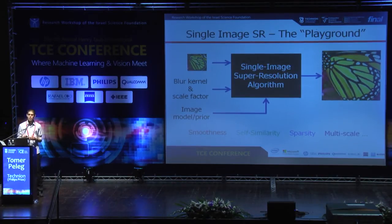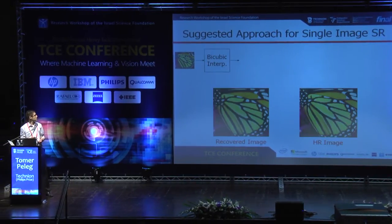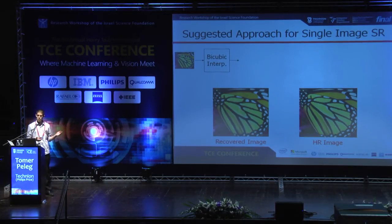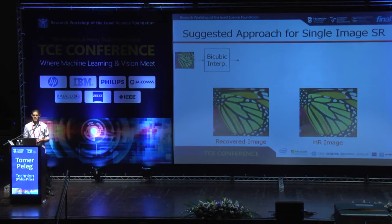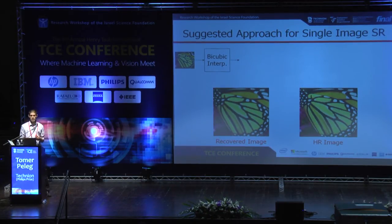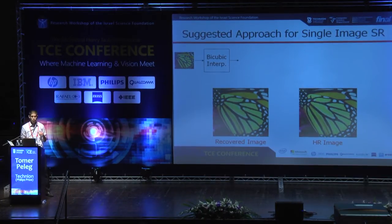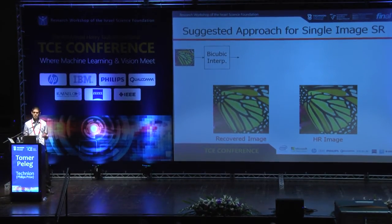Before we do so, I would like to show an overview of our approach. First of all, we perform bicubic interpolation on the low resolution image. On the right you see the ground truth high resolution image, and on the left the recovered image after bicubic interpolation. Both have the same number of pixels, but the left one is much degraded. We suggest increasing image reconstruction quality using a multi-level scheme, where each level improves the reconstruction gradually, bit by bit.